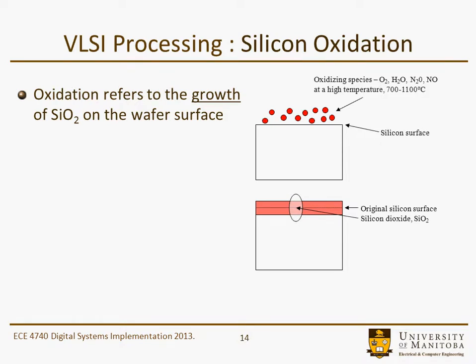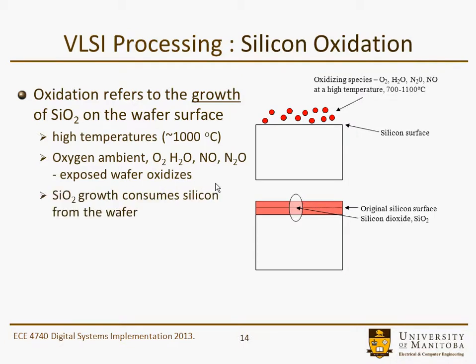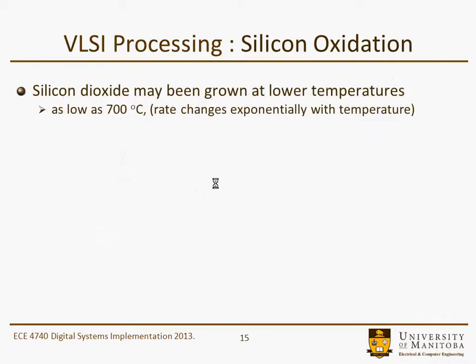Continuing with VLSI processing, this is the silicon oxidation section. We're looking at the growth of oxide layers on a wafer surface — typically silicon dioxide. This schematic shows how that takes place: here's the bulk silicon, and here's oxygen coming in either as an oxygen molecule, water, or something else carrying oxygen, exposed at high temperature. The surface reacts with the oxygen and forms a silicon dioxide layer, which consumes silicon from the wafer, so growth of the dielectric is both into and on the surface.